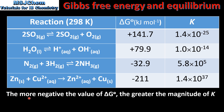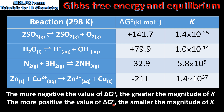From this we can see that the more negative the value of the standard change in Gibbs free energy, the greater the magnitude of the equilibrium constant K, and the more positive the value of ΔG°, the smaller the magnitude of K. It's also worth noting that the first two reactions, having positive ΔG° values, are non-spontaneous at 298 Kelvin, while the last two reactions, having negative ΔG° values, are spontaneous at 298 Kelvin.